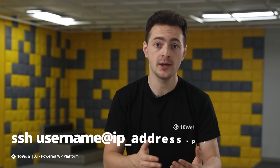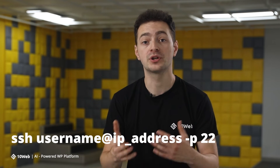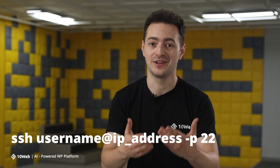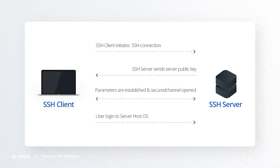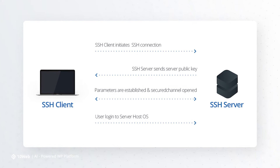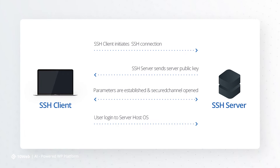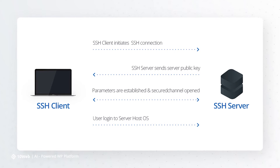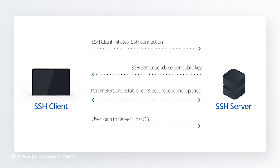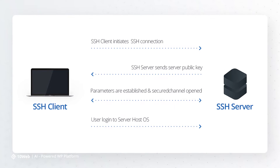Using a command-line based client like OpenSSH, users run SSH and request the connection using their username and the remote computer's IP address and port like this. Then the client and the server exchange identifying information and prompt for the password or public key. After entering the password, the SSH session starts if the user's credentials are correct.